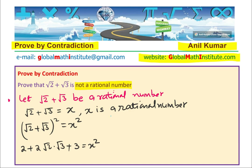So from here, we can rearrange. 2 plus 3 is 5. So we get 5 plus 2 square root 6 equals to x square. And we can say 2 square root 6 is equal to x square minus 5. Now we can divide by 2 and say square root 6 is equal to x square minus 5 by 2.